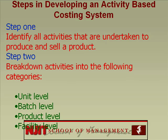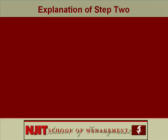Before we go on to the other steps — there are five steps total — I want to stop and explain step 2, because in one sense this is the most important step. We break down activities into unit level, batch level, product level, and facility level. Let me spend a few minutes on this.